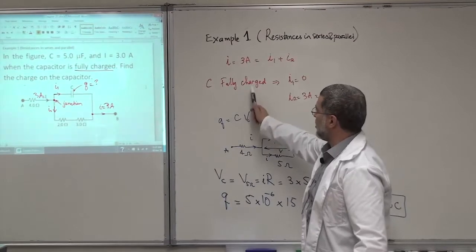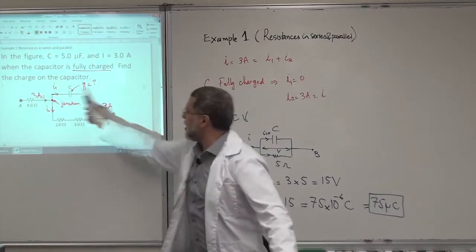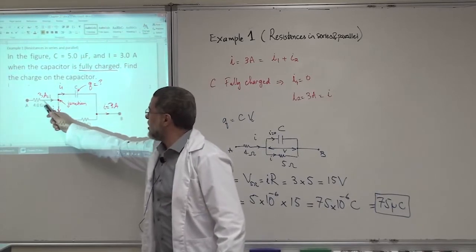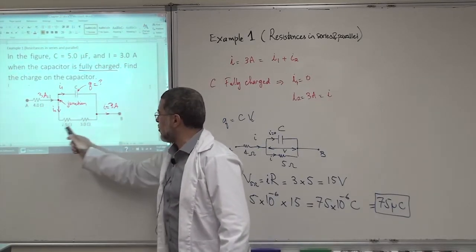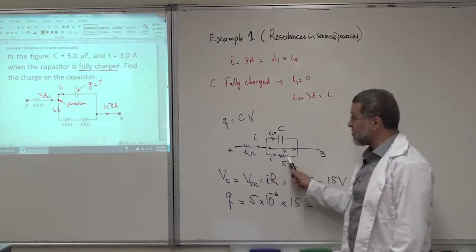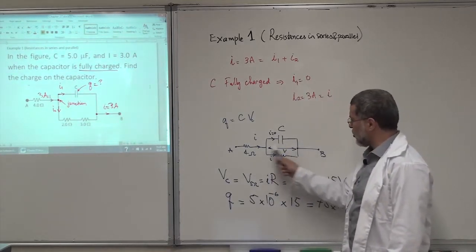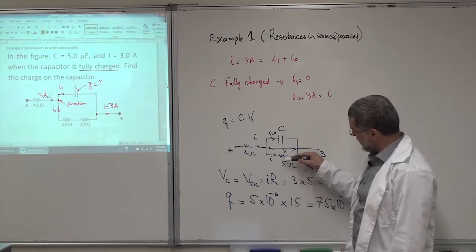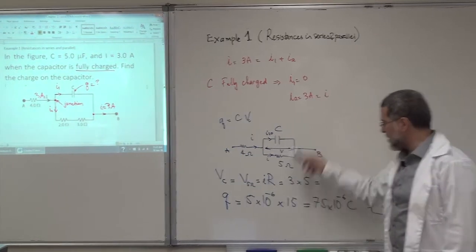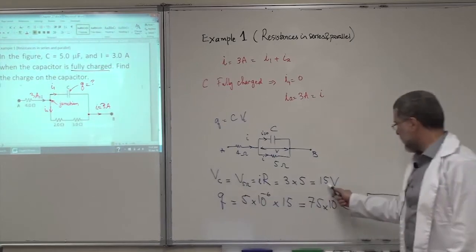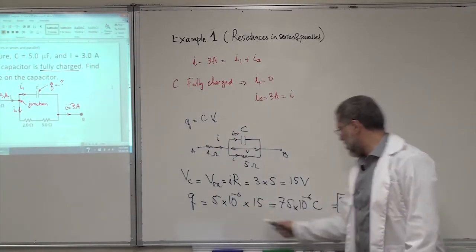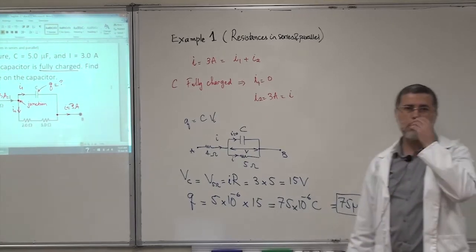To recapitulate: when the capacitor is fully charged, I1 equals zero. The current through the series resistors is the same as the main current. Using that current and the 5-ohm resistance, we find the voltage across those resistors, which equals the voltage across the capacitor. Multiplying by the capacitance gives the charge Q = 75 microcoulombs.